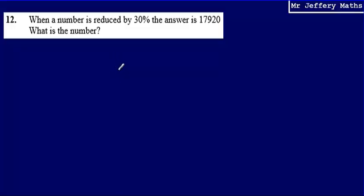This is question 12 from a series of videos taking a look at the Edexcel practice papers. Here we're told that when a number is reduced by 30%, the answer is 17,920, and we're asked what is the number?